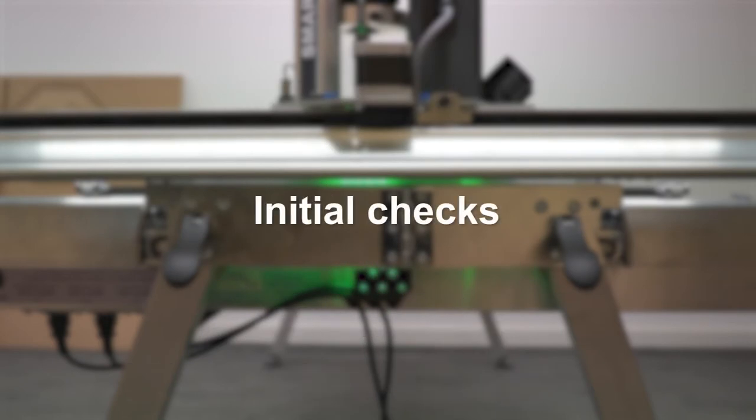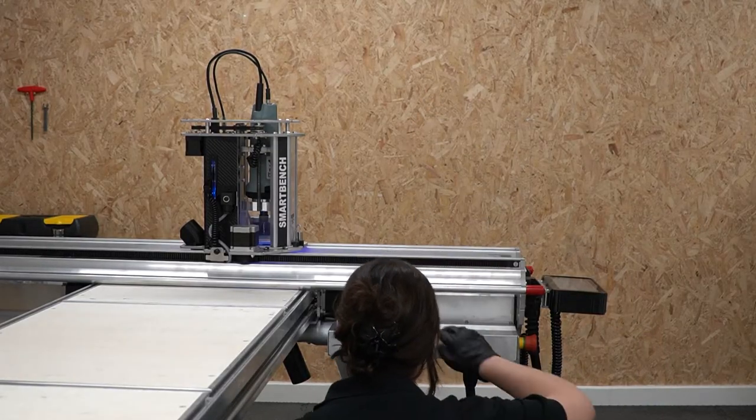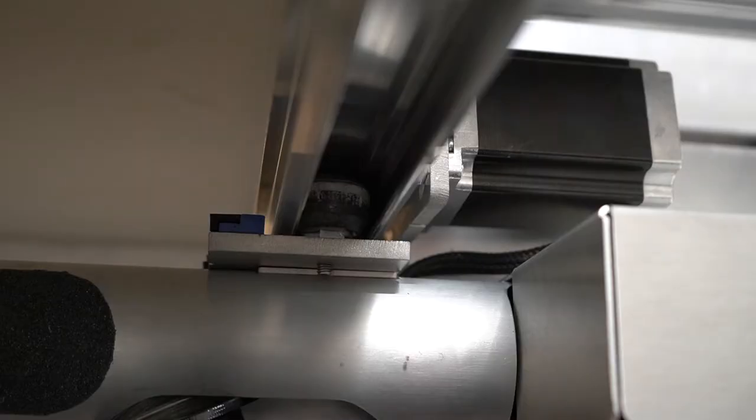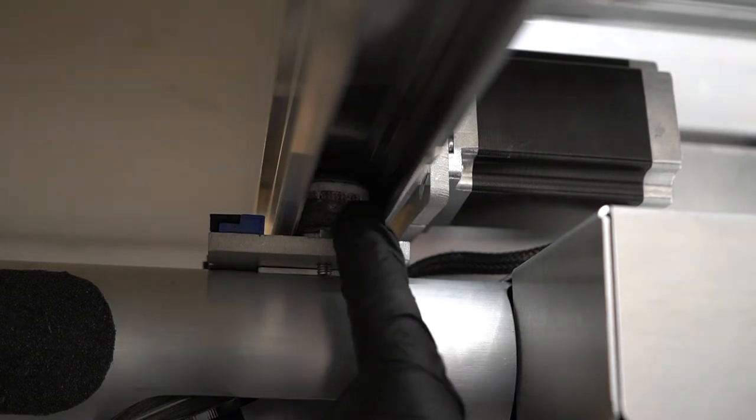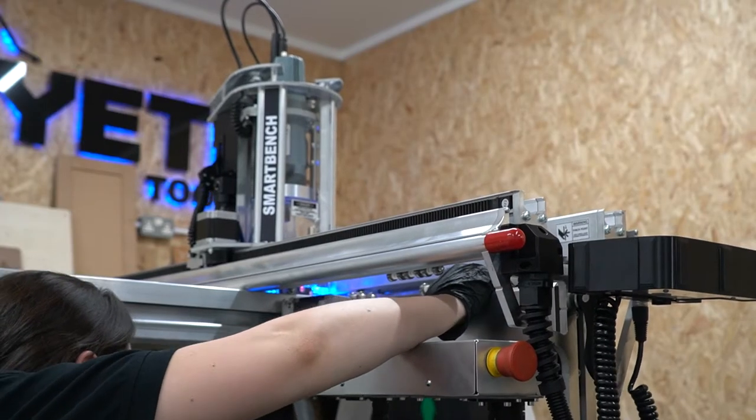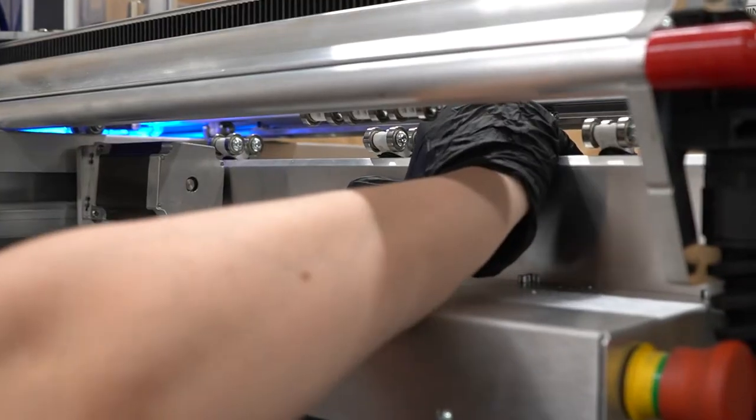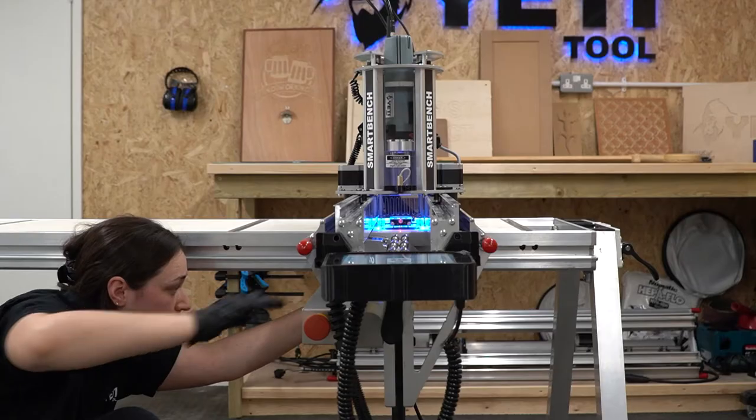An easy way to check if your y-axis needs attention is to check for excessive movement. When your wheels are set correctly there should be little to no movement with these checks. With smart bench powered on, place one hand on the X lower beam and hold one finger against wheel set 1 in the channel. Rock the beam back and forth. If the wheels are set correctly there should be very little movement. As you can see these wheels will need setting.